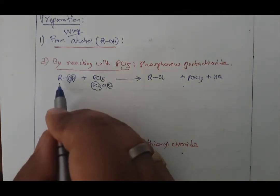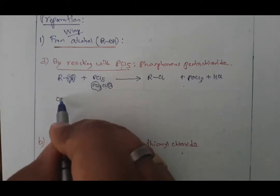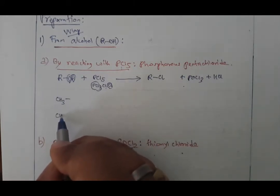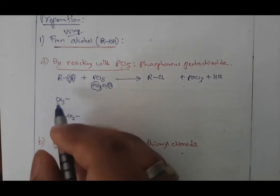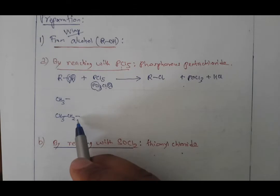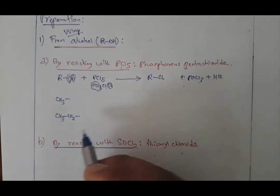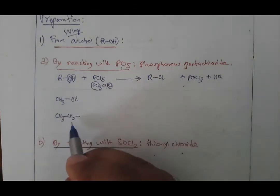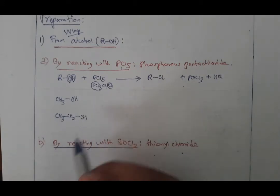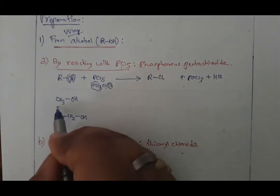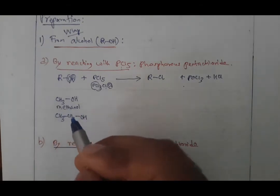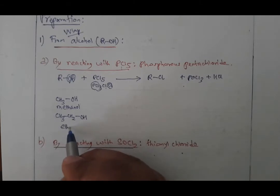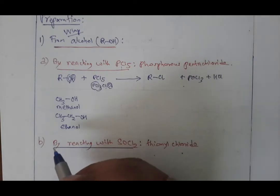Let us look at a particular example. Replace R with CH3 (methyl) to get methyl alcohol; replace R with CH3CH2 (ethyl) to get ethyl alcohol. The IUPAC name of methyl alcohol is methanol, and ethyl alcohol is ethanol. The suffix -ol means alcohol in IUPAC nomenclature.